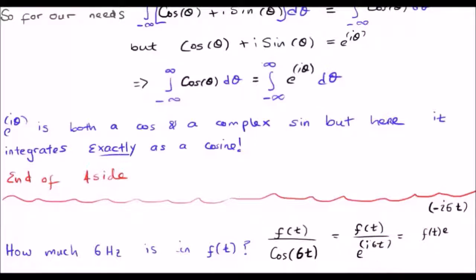So, we have f of t multiplied by e to the minus i 6t. So, what that means is that f of t multiplied by e to the minus i 6t is the same as dividing our function by cosine 6t in this particular case.